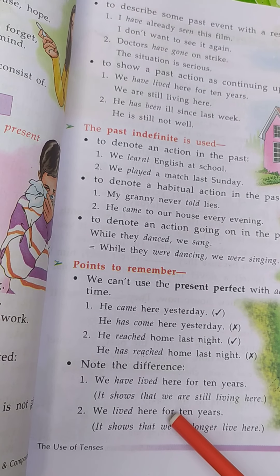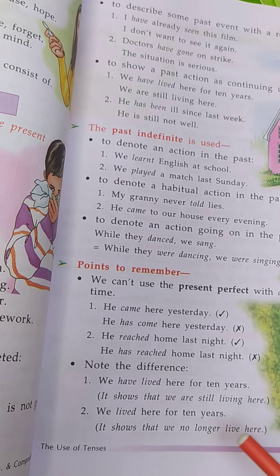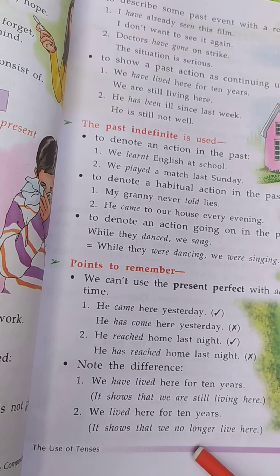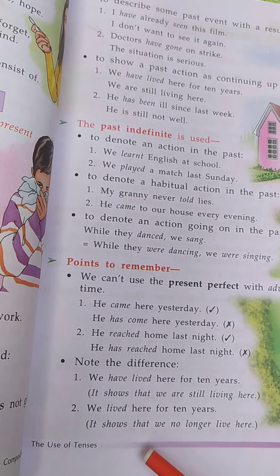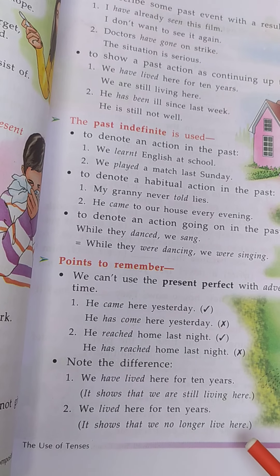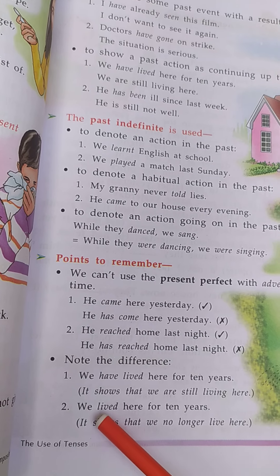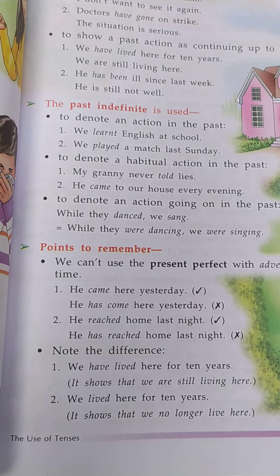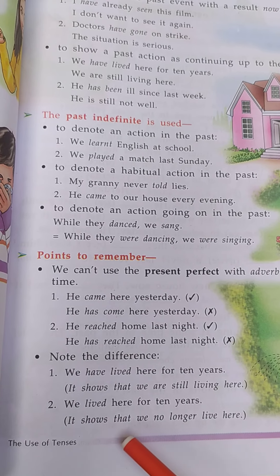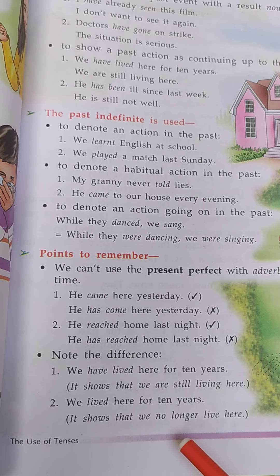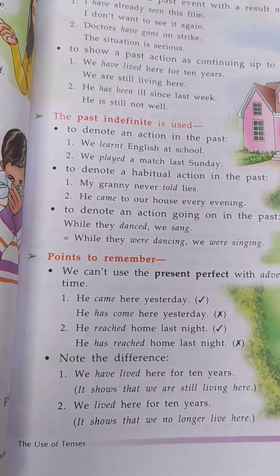Number two: we lived here for 10 years. हम 10 साल इधर रहते थे। It shows that we no longer live here — इसका मतलब है हम अभी इधर नहीं रहते हैं, लेकिन 10 साल पहले रहते थे। इसलिए इस sentence में past indefinite tense यूज़ हुआ है — lived, V2 form — क्योंकि यह action show कर रहा है कि जो पहले होता था अभी नहीं हो रहा है।